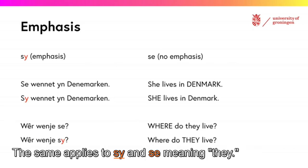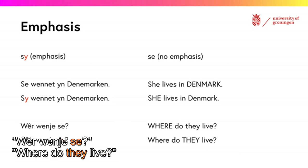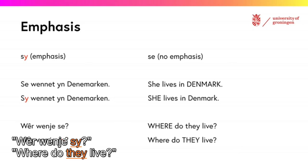The same applies to 'ze' and 'schei', meaning 'they'. 'Where venn je ze?' — where do they live? 'Where venn je schei?' — where do they live?